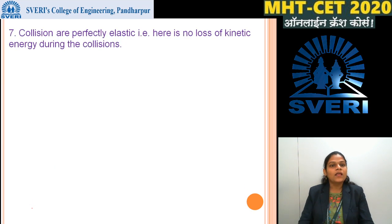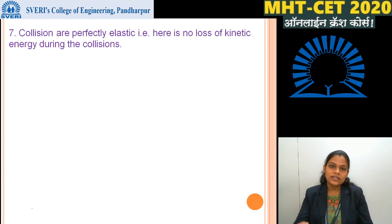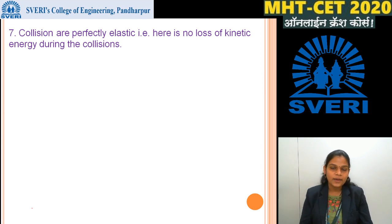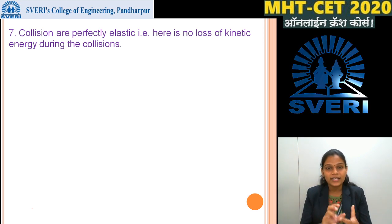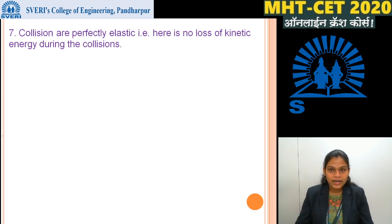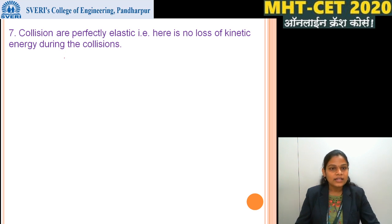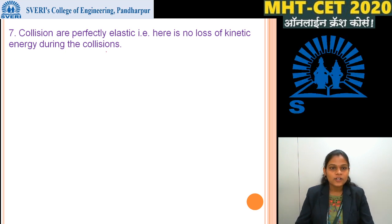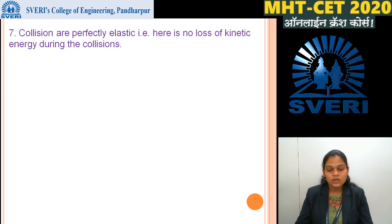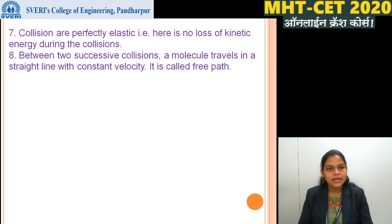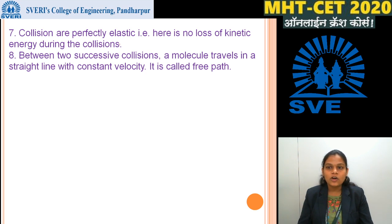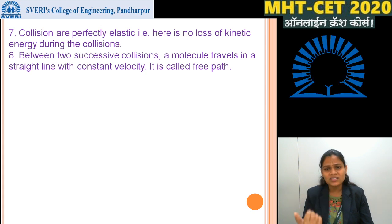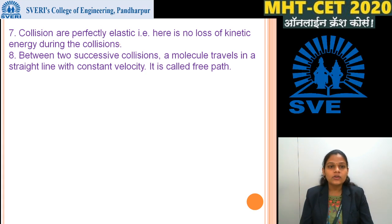Sixth assumption: the collisions are perfectly elastic — there is no loss of kinetic energy during a collision. Seventh assumption: between two successive collisions, the molecules travel in a straight line with constant velocity.